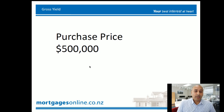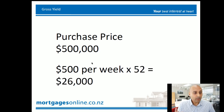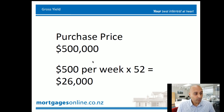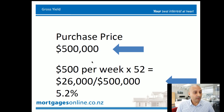So let's say you buy something for $500,000 and the rent is around $500 per week. What you do is take that $500 per week, get to an annual amount — so times 52 weeks in a year — and you get $26,000. Take your $26,000 annual rent and divide that by $500,000 and that will give you the gross yield. So that gives you 5.2%.